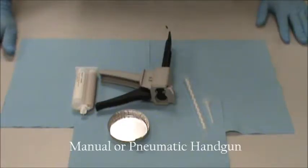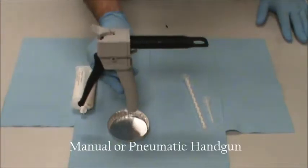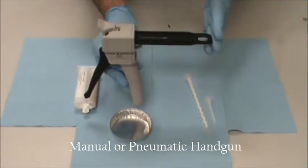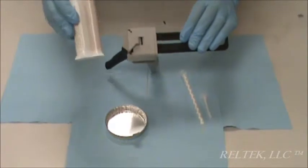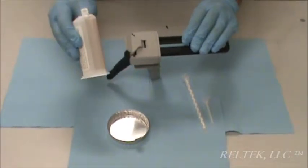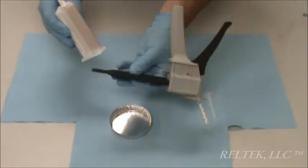Okay, the first method that's preferable is to use a manual handgun with a plunger sitting in the back for the appropriate ratio of the cartridge. This particular cartridge is a two to one ratio and that's what we have in the back of the gun.